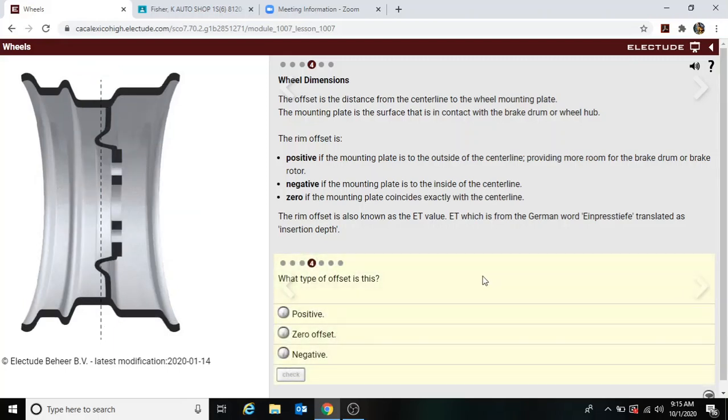What type of offset is this? Okay, so we're looking at, here's the mounting plate, here's the center line, so the mounting plate is on the inside of the center line. So here's the center line, here would be the inside.